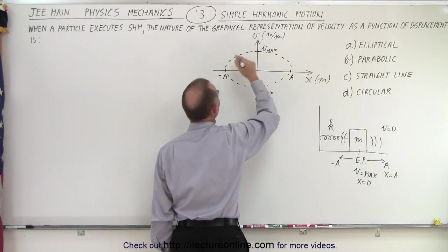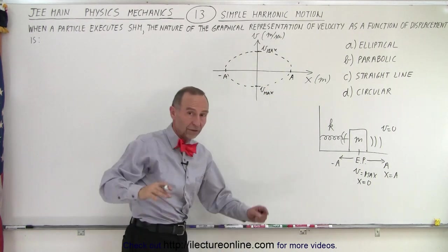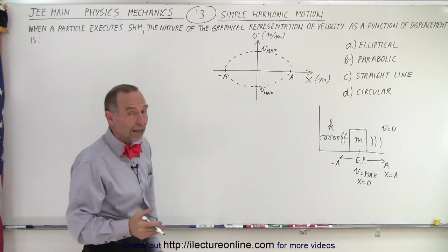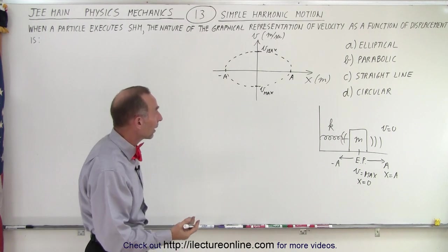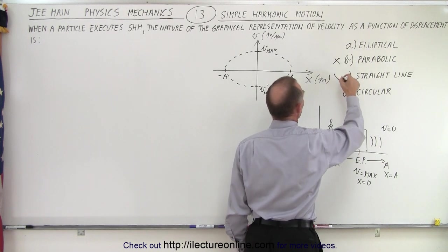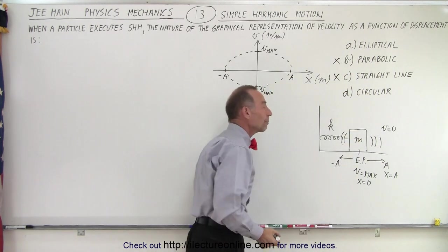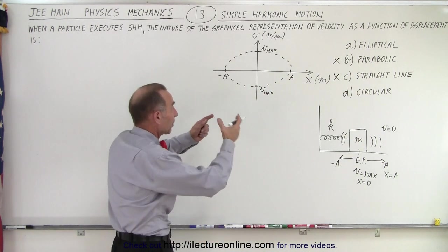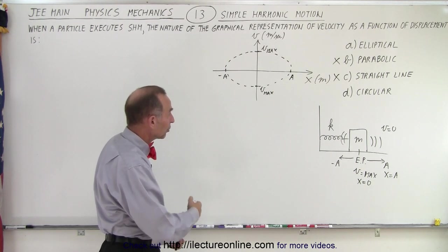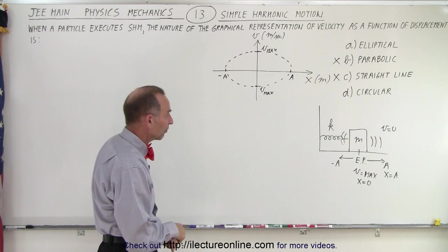Now here I drew this as an ellipse, but it could very well be a circle. So right away by looking at that, you realize that you would not have a parabolic shape and you would not have a straight line shape, but it could be an elliptical shape or a circular shape depending upon the values of A and V max. A being the maximum amplitude and V max being the maximum velocity.